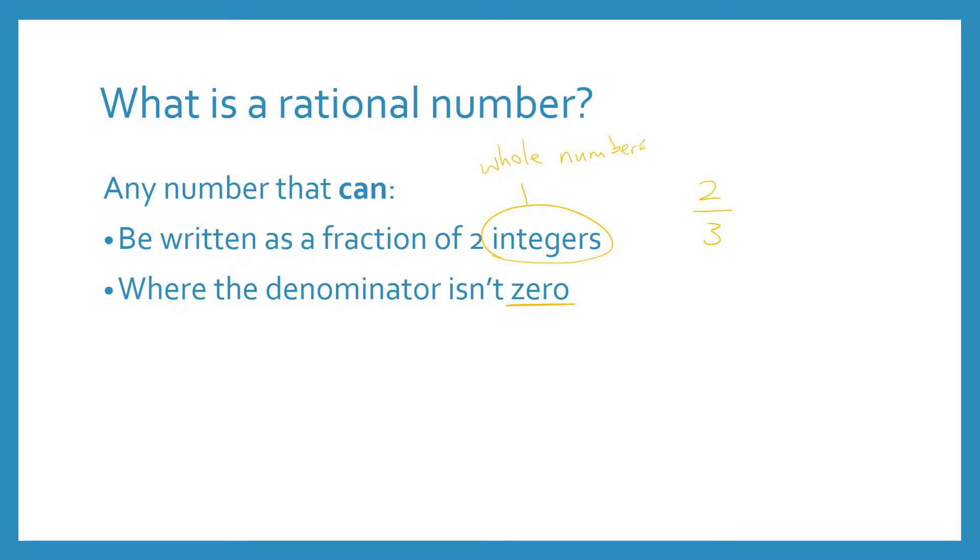So we have a fraction of two integers. Two is an integer, three is an integer. So two thirds is a rational number. 74 over 365 is a rational number. So this is what a rational number is, any number which can be written as a fraction of two integers.